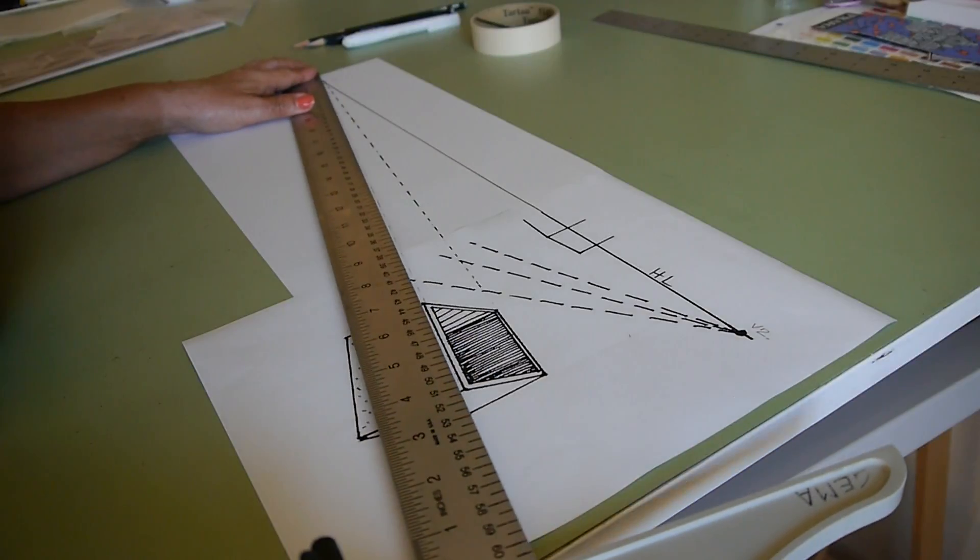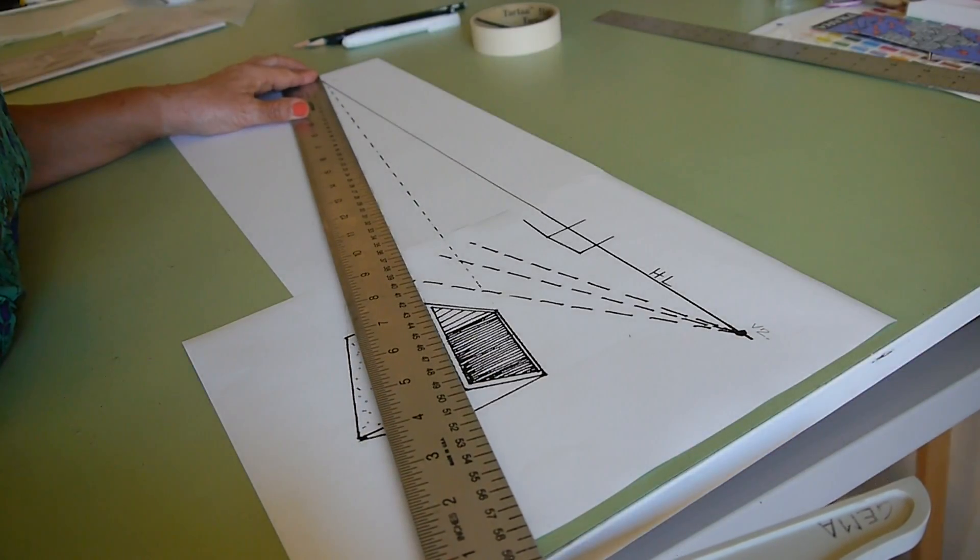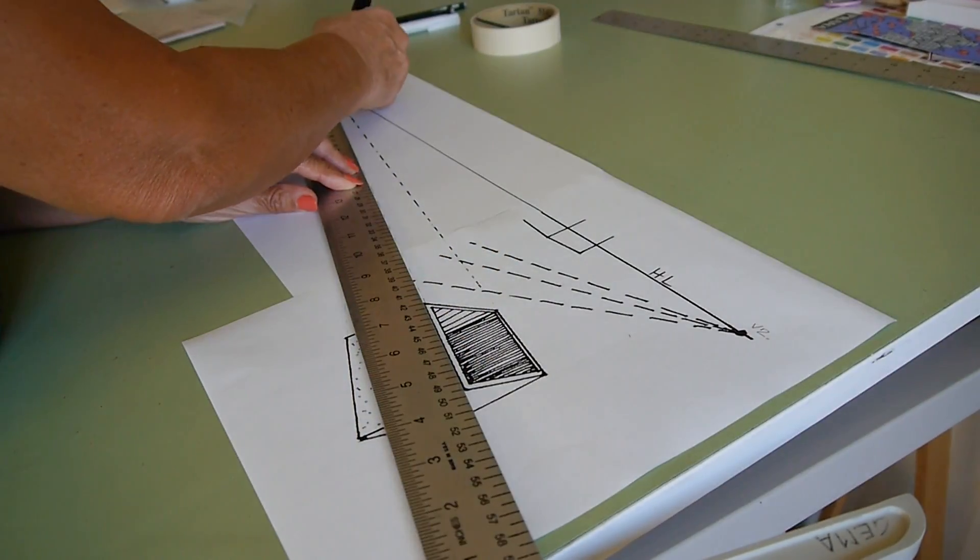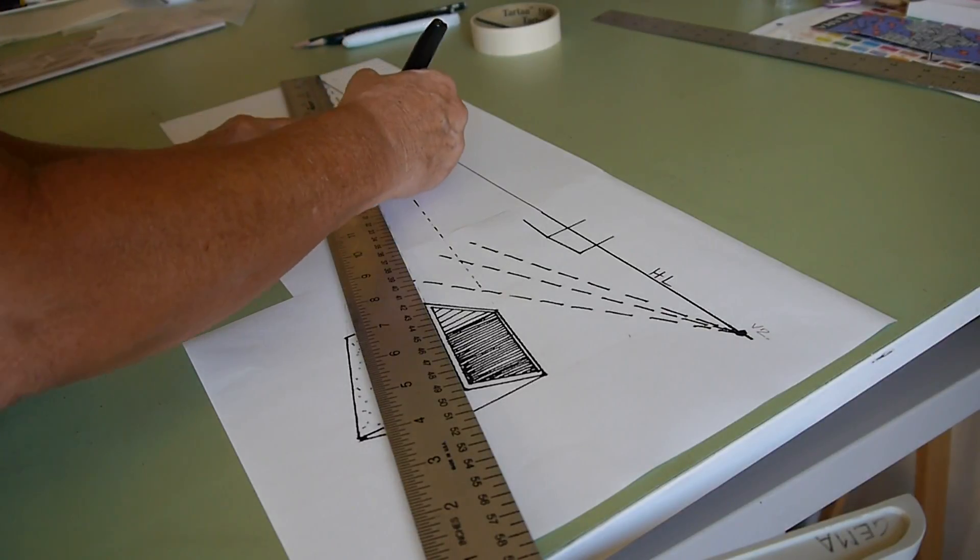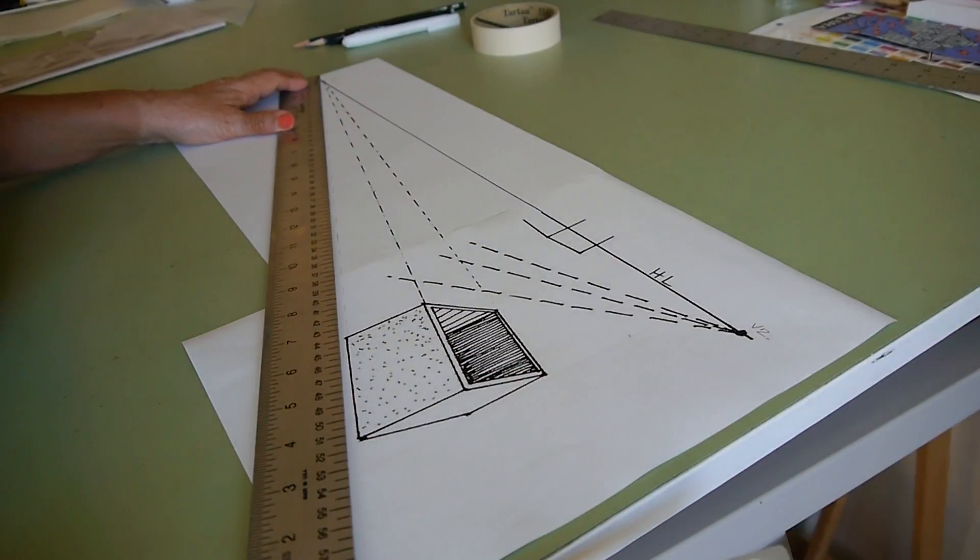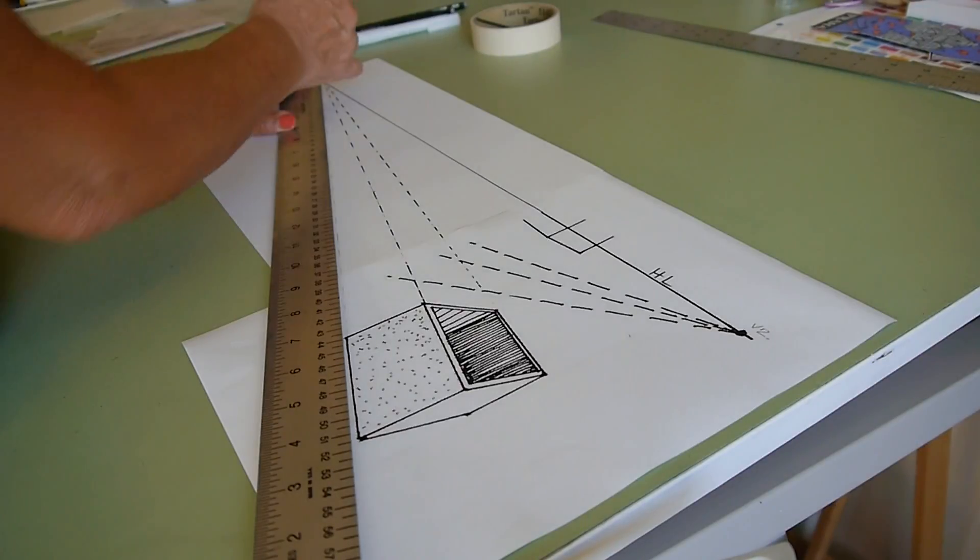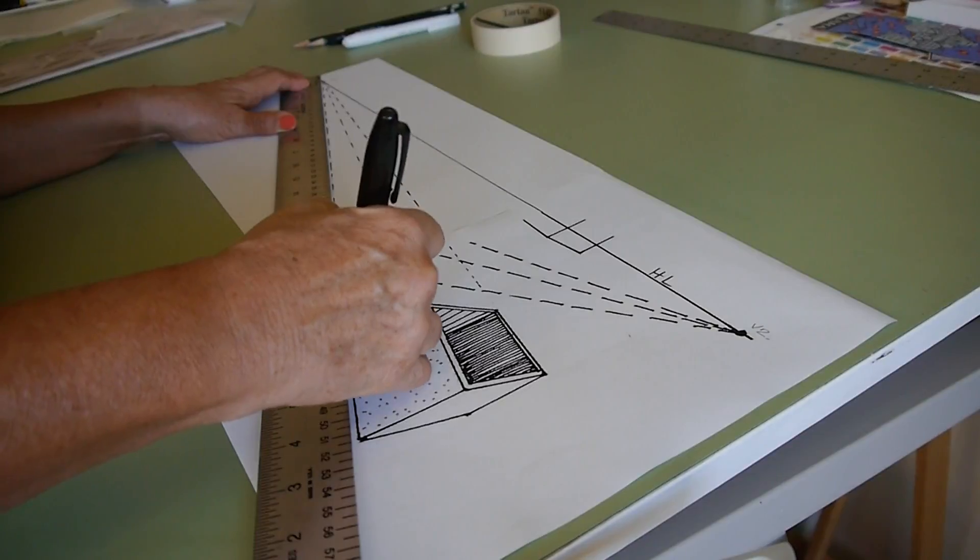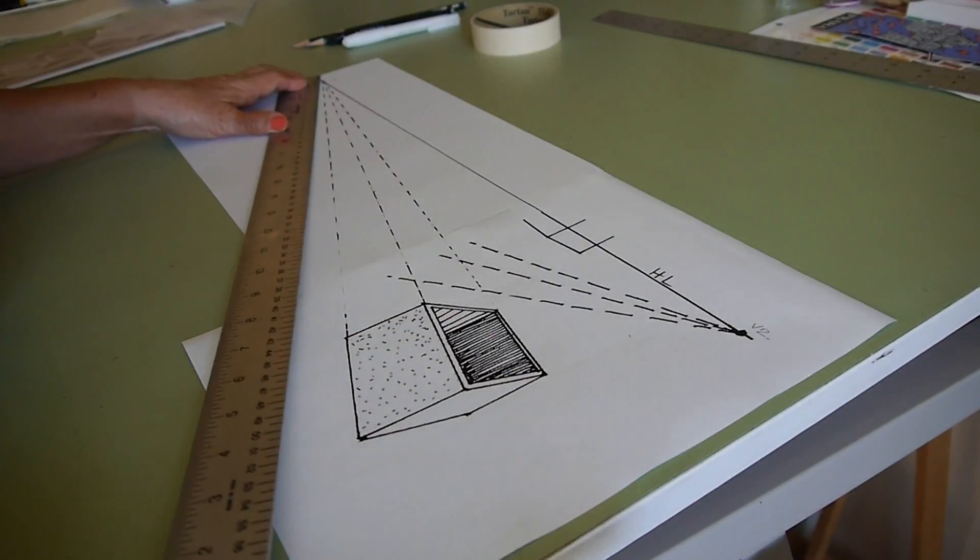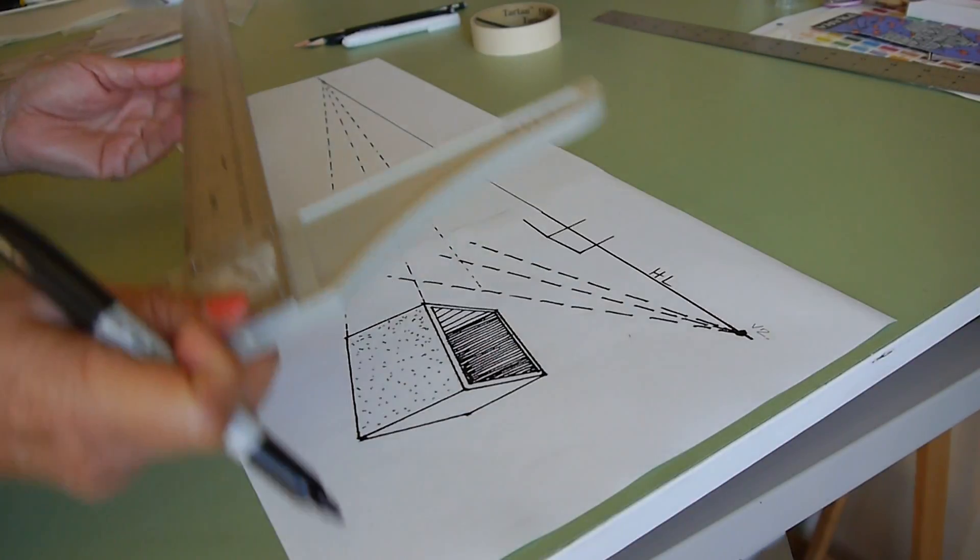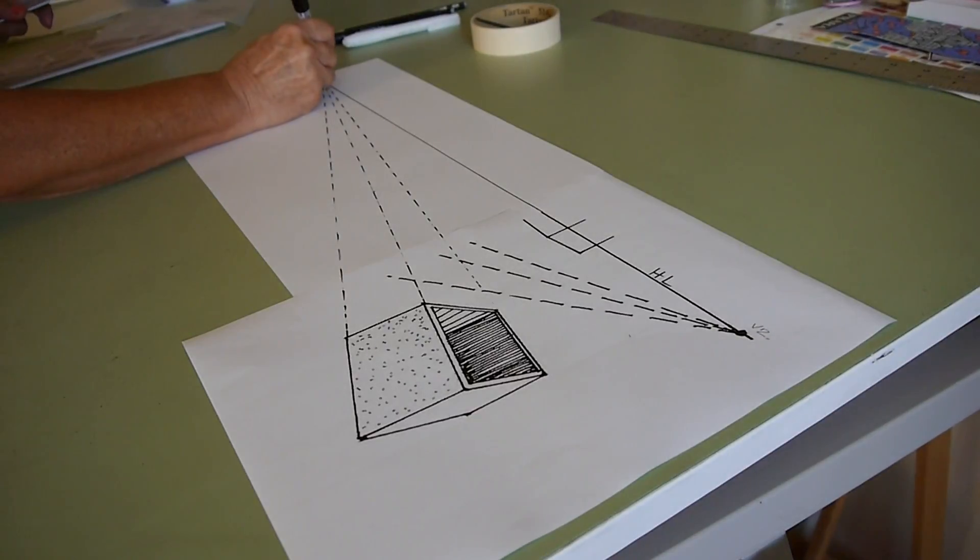Then it's going to be the front. It's very important to always keep that vanishing point in sight. Now you can see where the vanishing point meets the horizon, so it's right here.